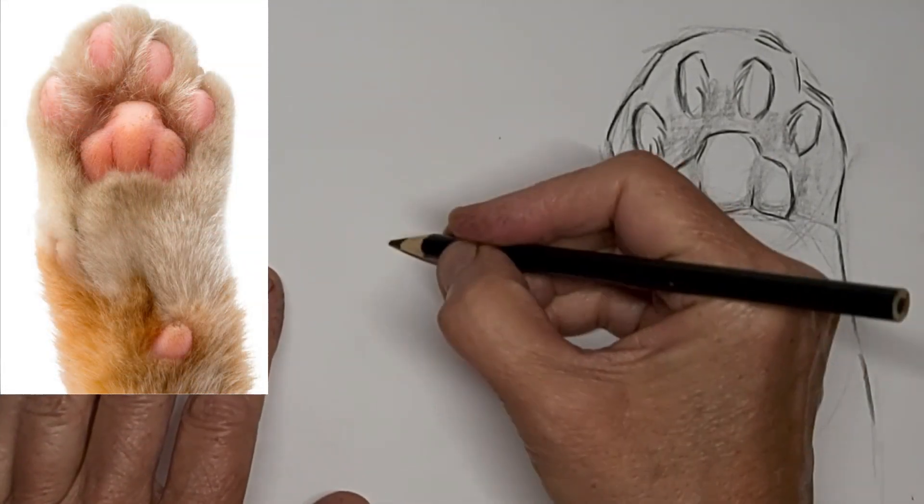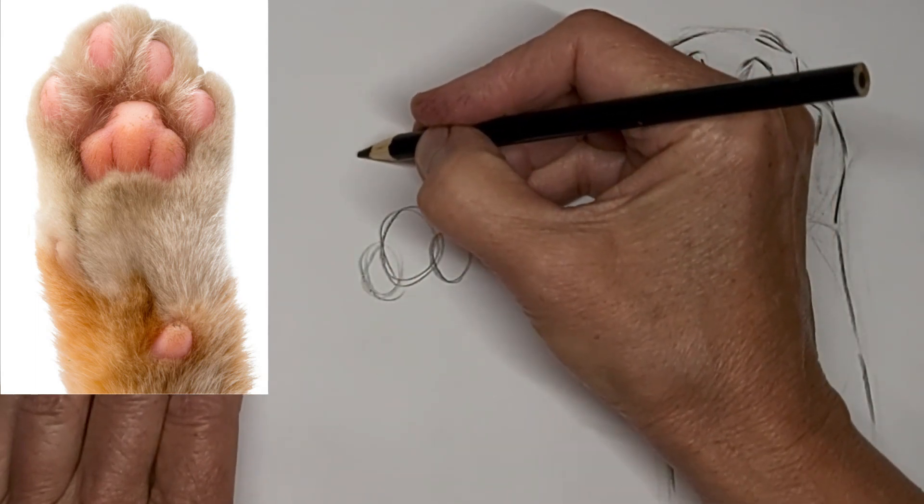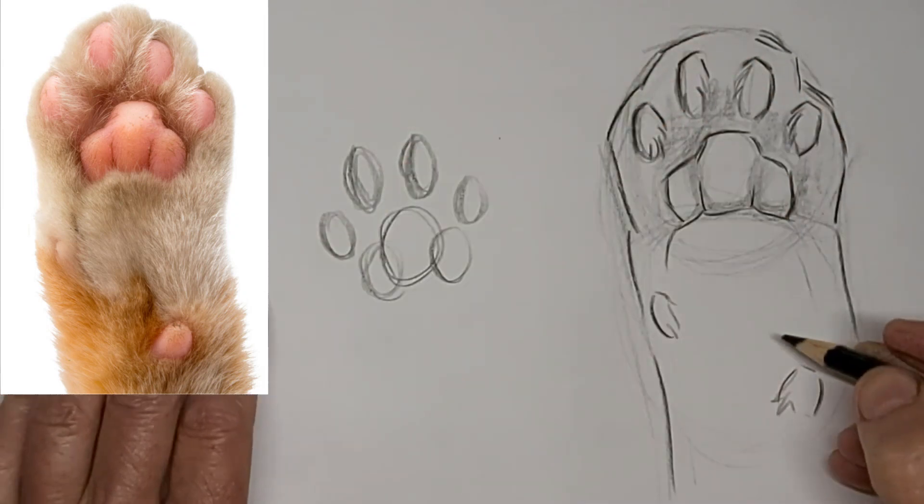And if you just want to do a paw print, you're basically doing the same thing as you did over on the right. Except we'll keep it more simple, and we'll fill it in with darkness.